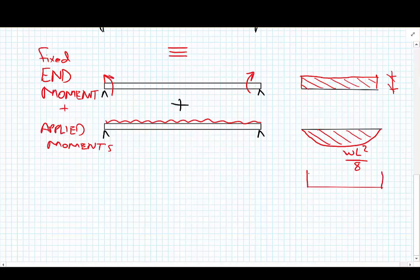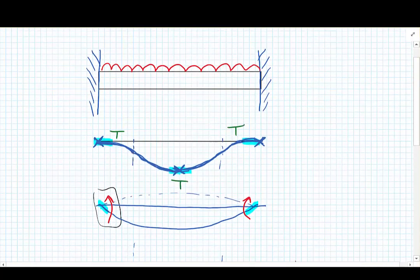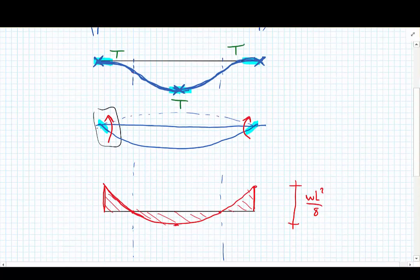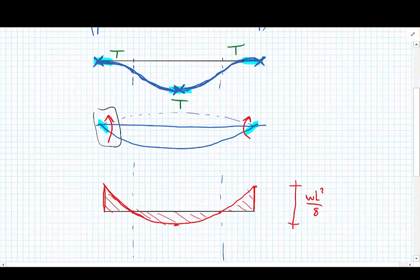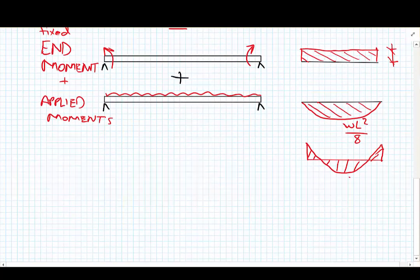Without knowing anything about how you can analyze statically indeterminate structures, using qualitative analyses about what the deflected shape must look like and therefore what the reactions must look like can lead us to a simple way of determining what the bending moment diagram must be.